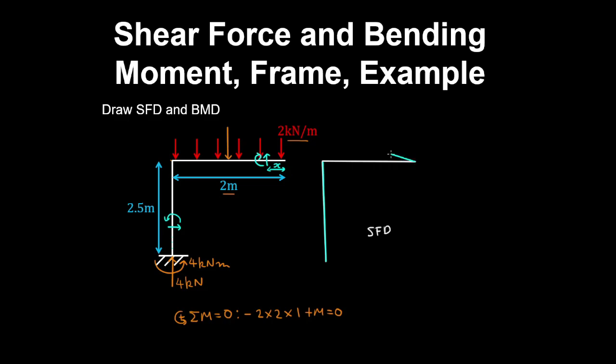Therefore it's going to vary linearly on that beam, with a magnitude of 2 by 2 meters, which is 4 kN.